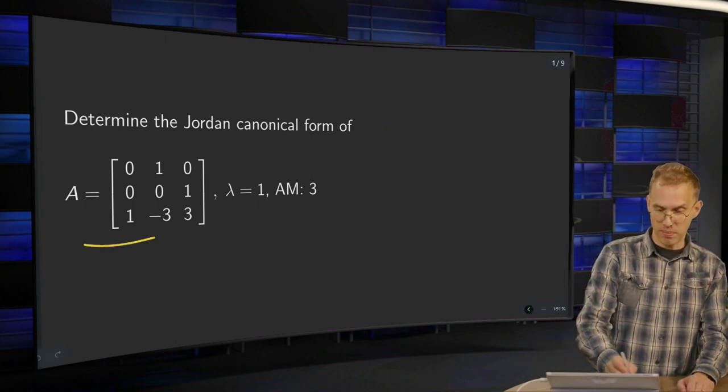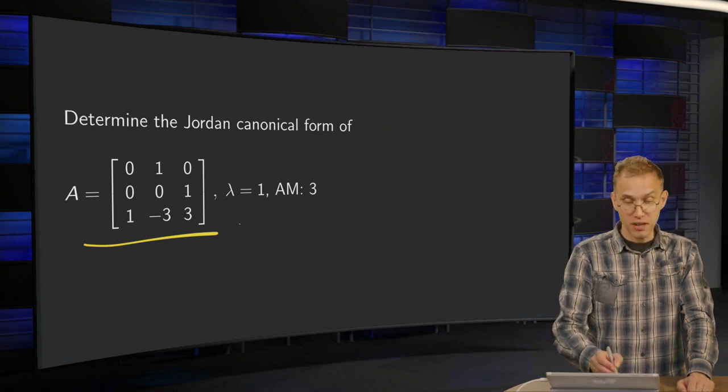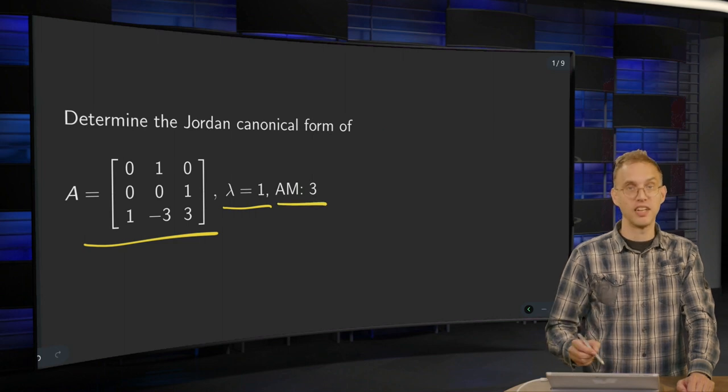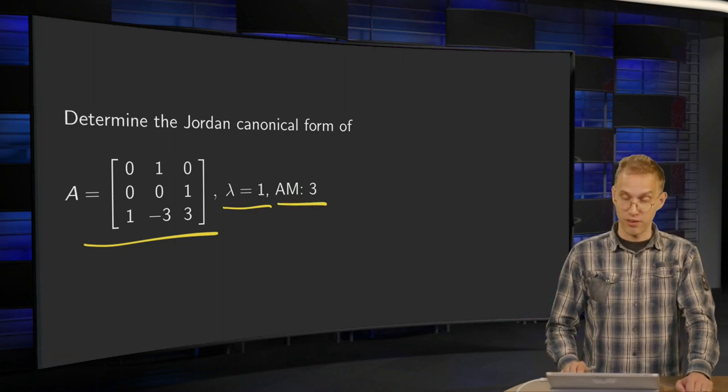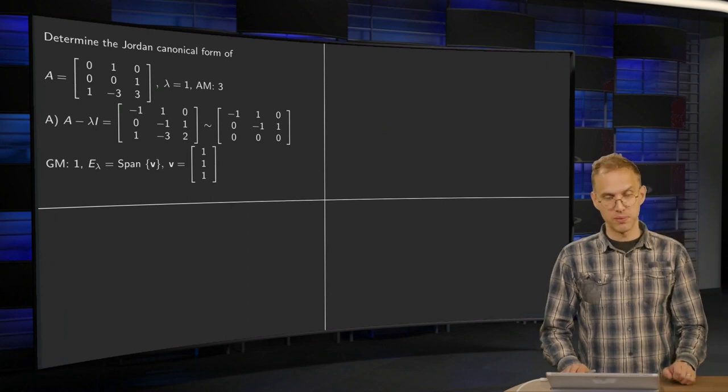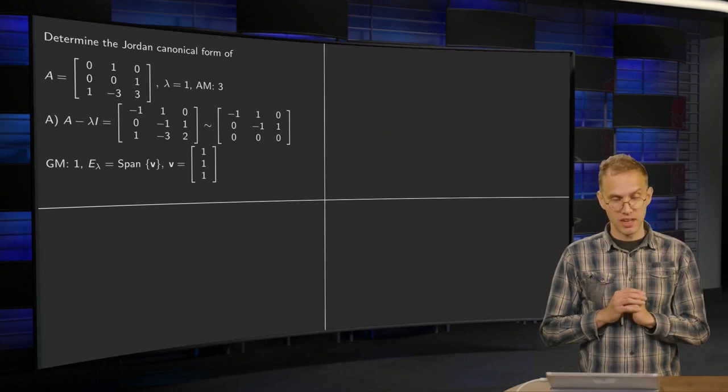So here we have matrix A. I have already given that the eigenvalue of A is lambda equals 1 and that it has algebraic multiplicity 3. So I skipped that part of all the computations. Now let's get started.